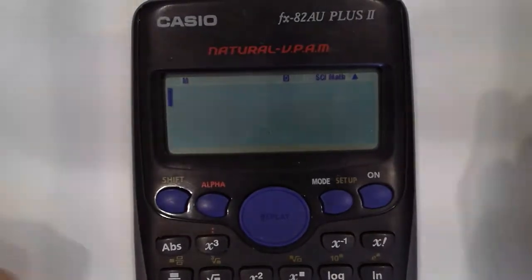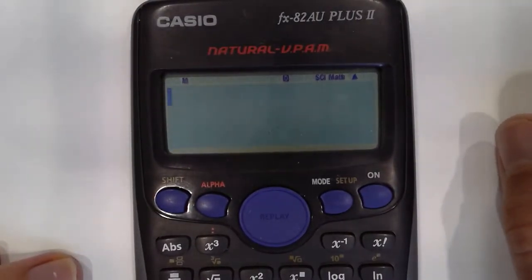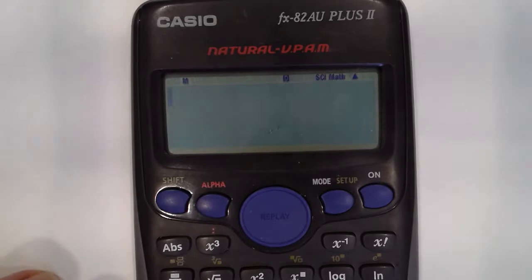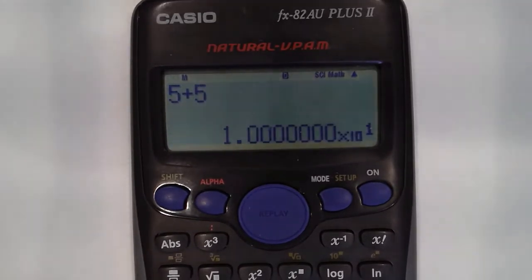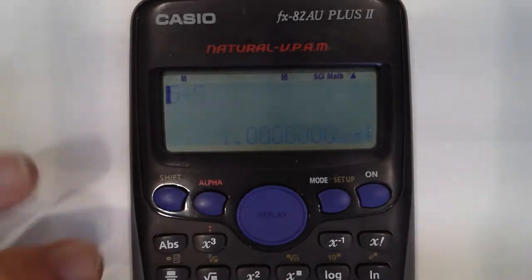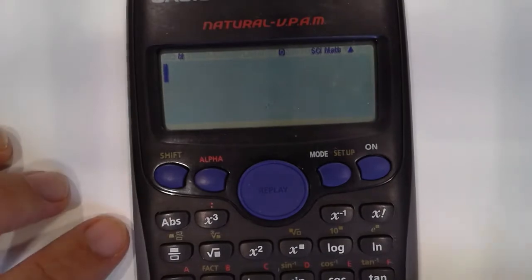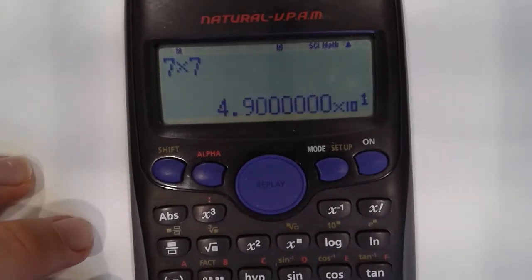Now some calculators, for some reason, go into standard form mode. And just to show you what that means is, if I did 5 plus 5, it gives me a long answer in standard form. And you don't really want that, because you can't get rid of it even if you turn it off or anything, it still puts it in that mode.